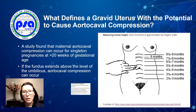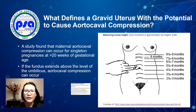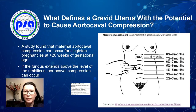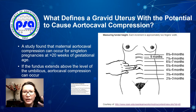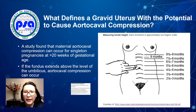Previously, tilting was recommended using a wedge for 30 degrees, but this is no longer recommended unless the patient is on a dedicated tilting table. So when do you start doing this? What defines a gravid uterus with the potential to cause aortocaval compression?